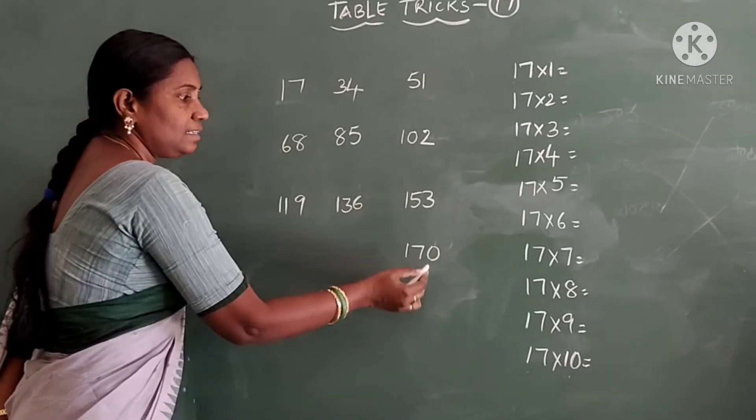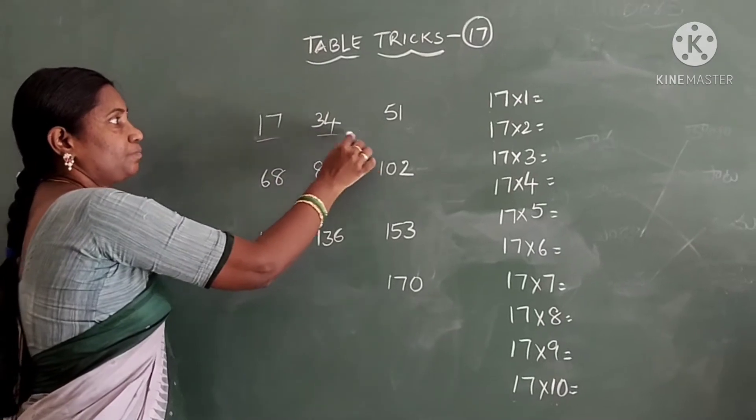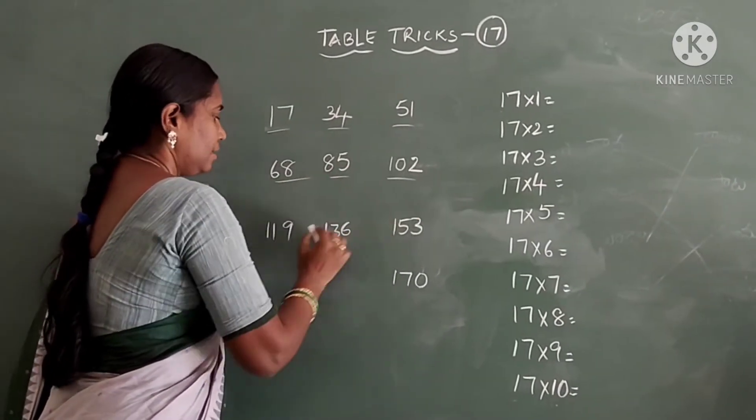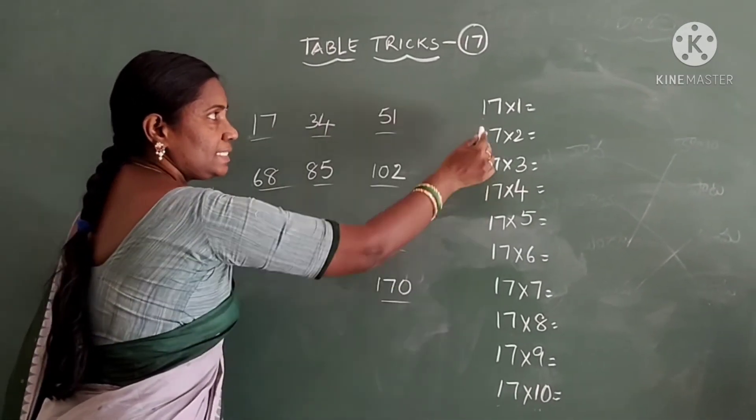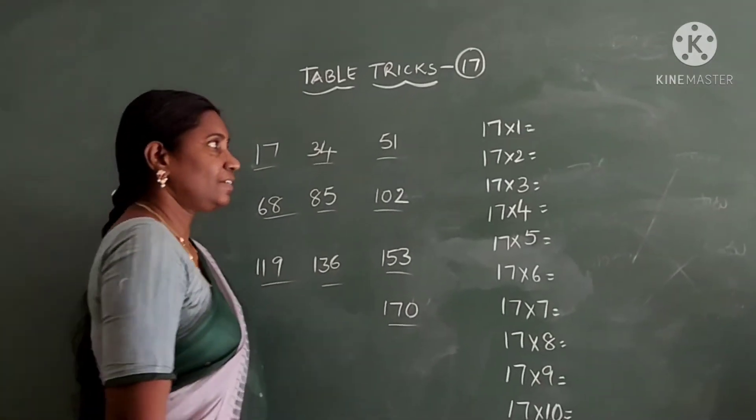17×10 is 170. So let us write how to complete the table trick of 17.